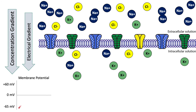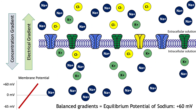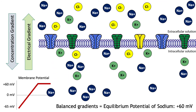As sodium moves into the cell, these gradients change in driving strength. As the neuron's membrane potential becomes positive, the electrical gradient no longer works to drive sodium into the cell. Eventually, the concentration gradient driving sodium into the neuron and the electrical gradient driving sodium out of the neuron balance with equal and opposite strengths, and sodium is at equilibrium. The membrane potential of the neuron at which equilibrium occurs is called the equilibrium potential of an ion, which for sodium is approximately positive 60 millivolts.